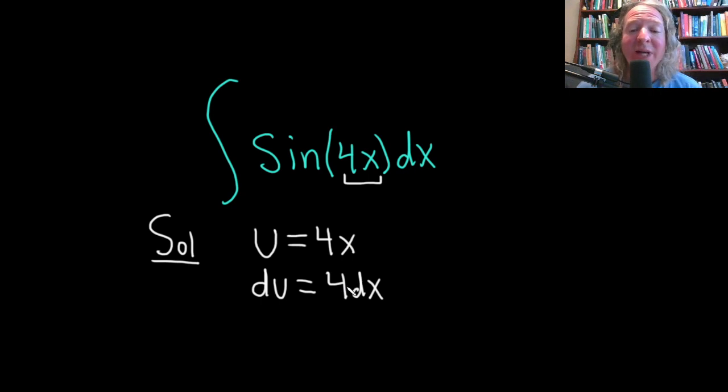Okay, so now the goal is to make this look like what's up here. You'll notice that here we have 4dx. There is no 4 here, right? So what we'll do is divide this by 4 so that we can make this look like what's up here.